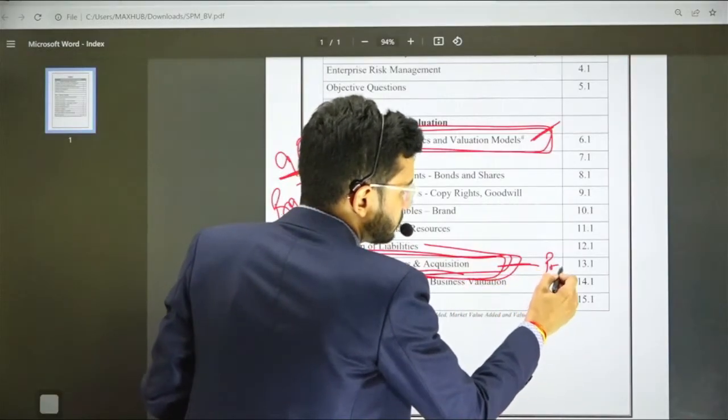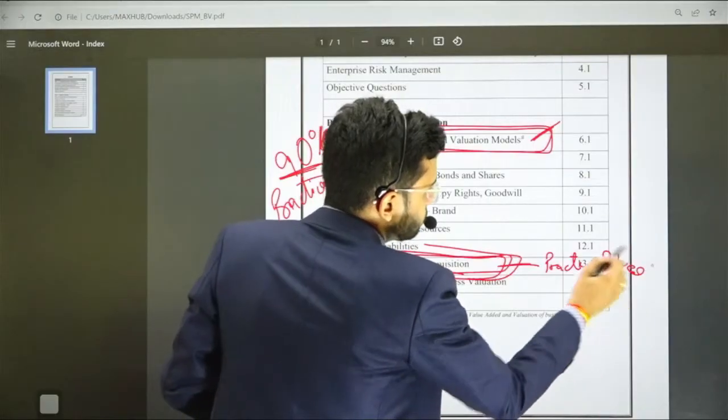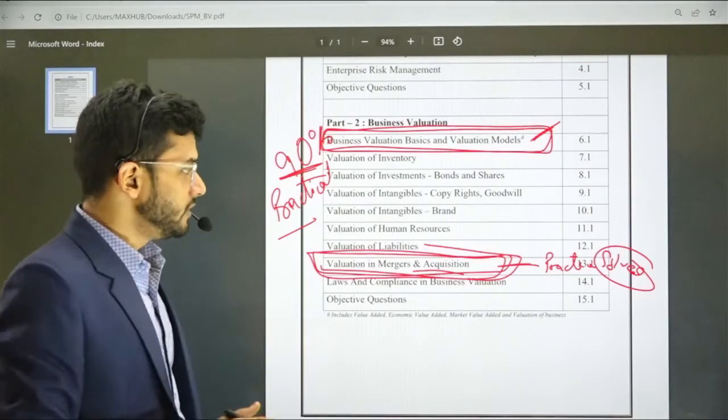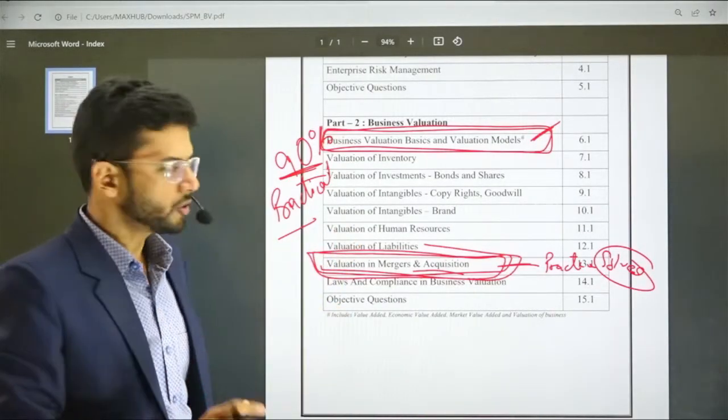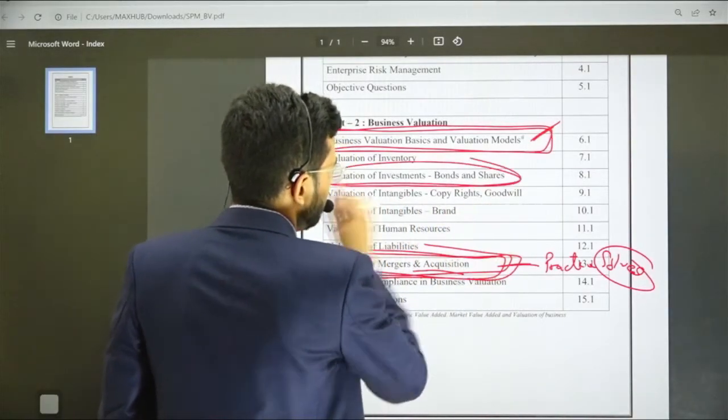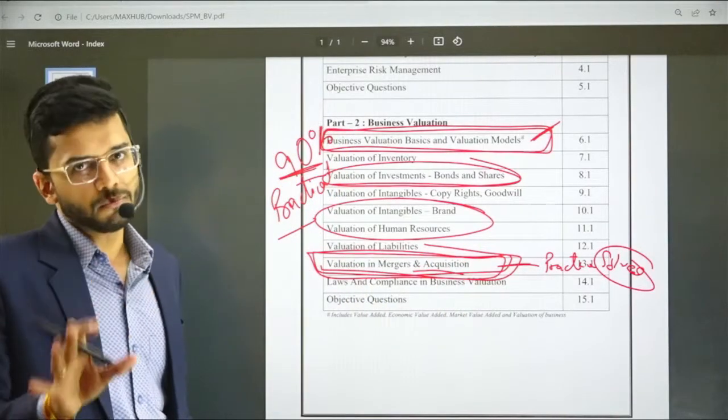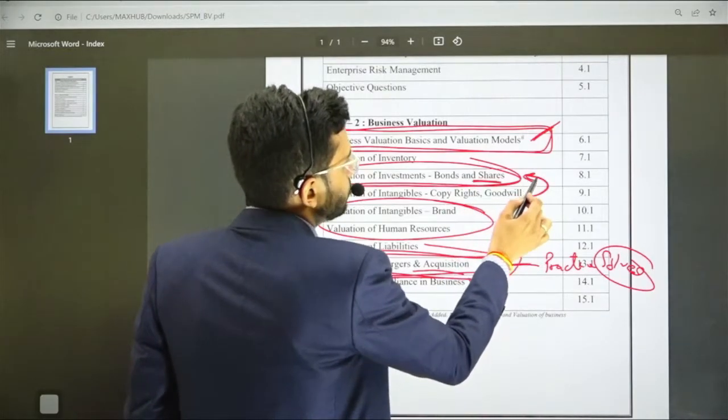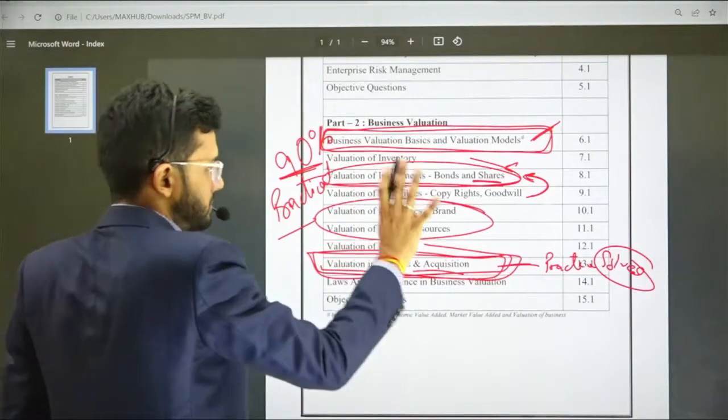These two chapters, valuation models and Mergers and Acquisition, have to be done thoroughly. In my book there are a plethora of practice questions. Just solve the practice questions. You have to do them yourself. These two chapters are covering almost 20 marks out of 50 marks of this part. Next is valuation of investments, bonds and shares, very important. Brand and human resources, this is the next important part.